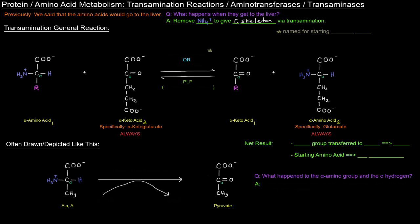Now the transamination, the general reaction, is that we start off with an alpha amino acid. And this could be any amino acid. And we'll call this alpha amino acid number one. And we'll also start with an alpha keto acid, and that alpha keto acid is specifically alpha ketoglutarate.